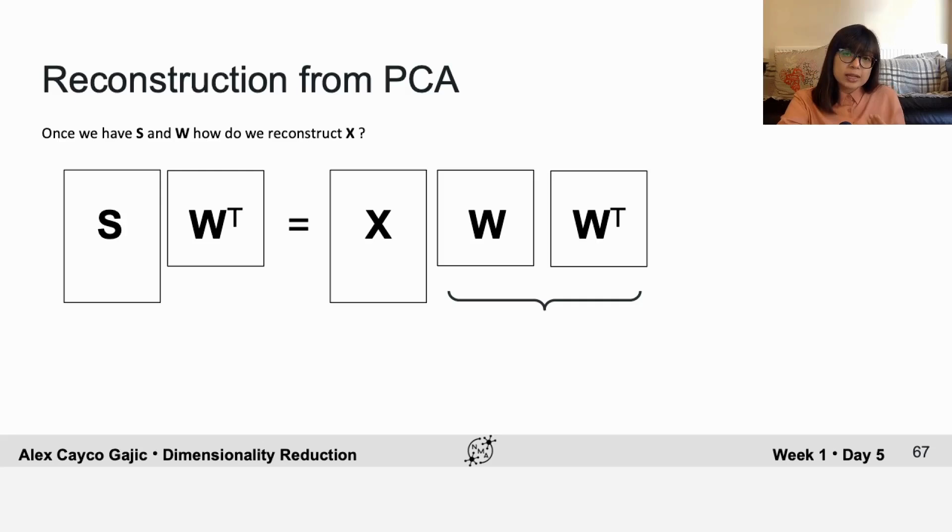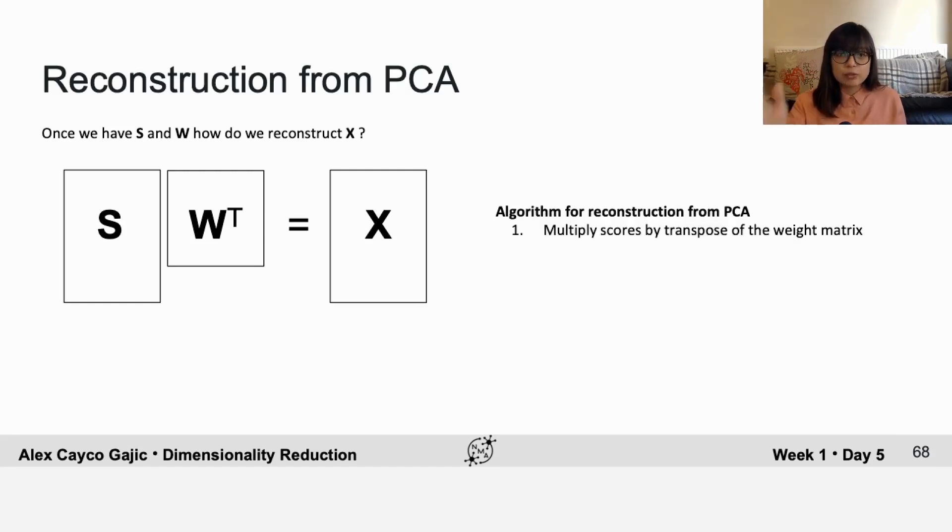And on the diagonals, that's the dot product between basis vector i and itself. That's going to be 1 because they're normalized. So that means that this W W transpose is the identity matrix, so you can just remove this. And it really is just that simple that to reconstruct x, you just need to multiply the scores by the transpose of the weight matrix. And importantly, don't forget to add the mean that you had originally removed when doing PCA.